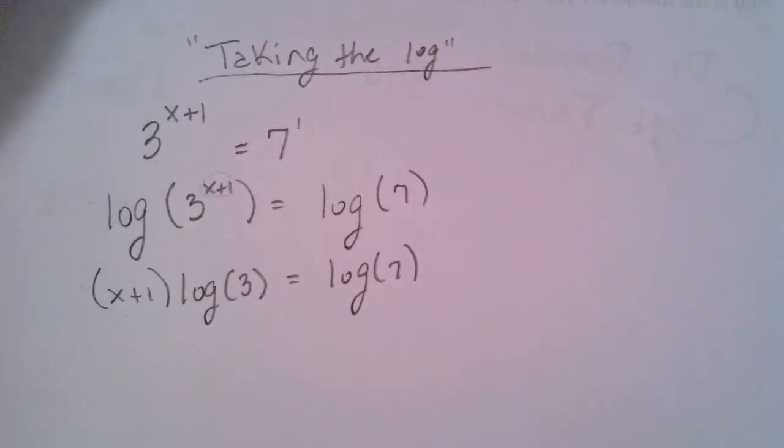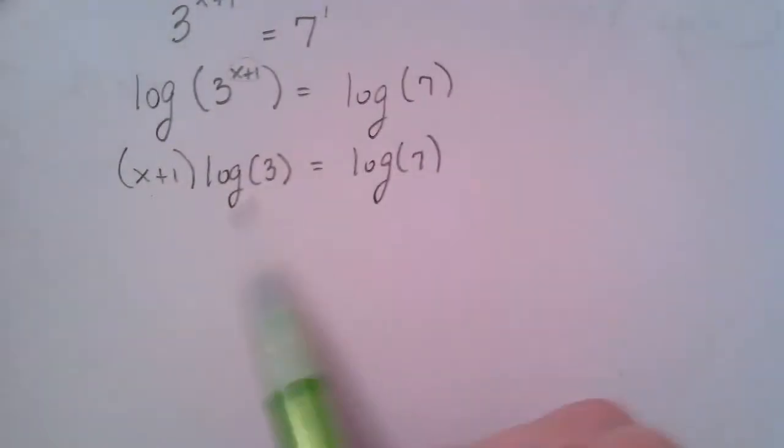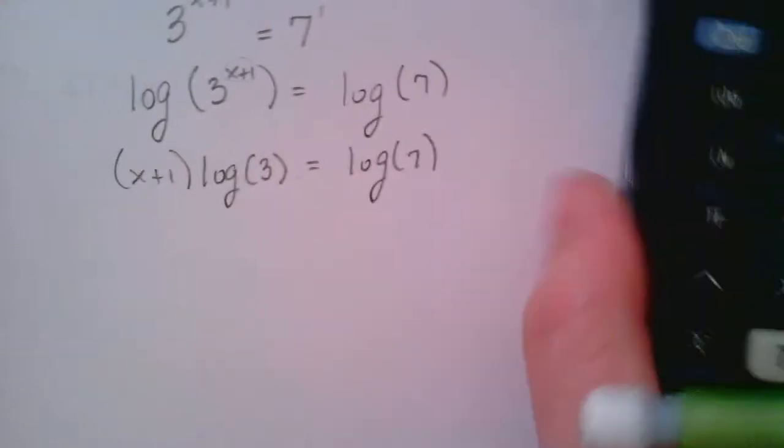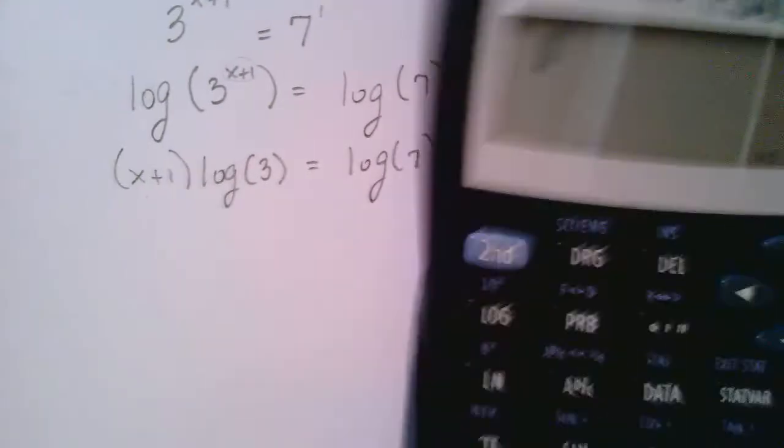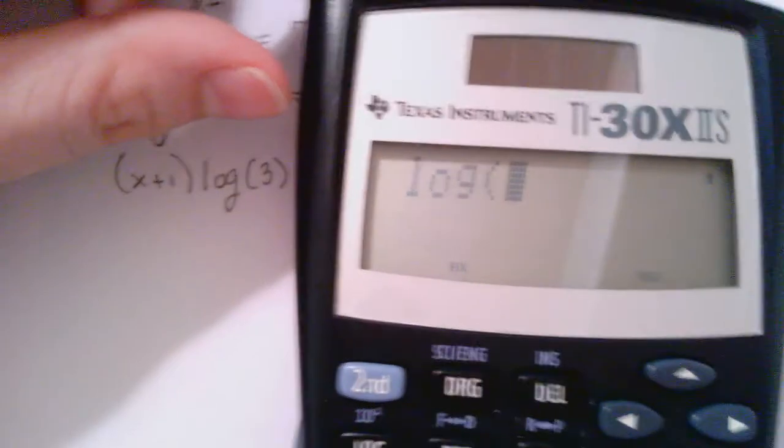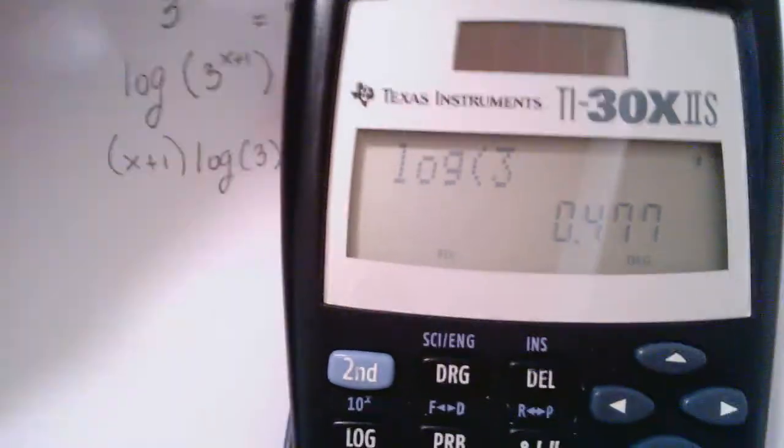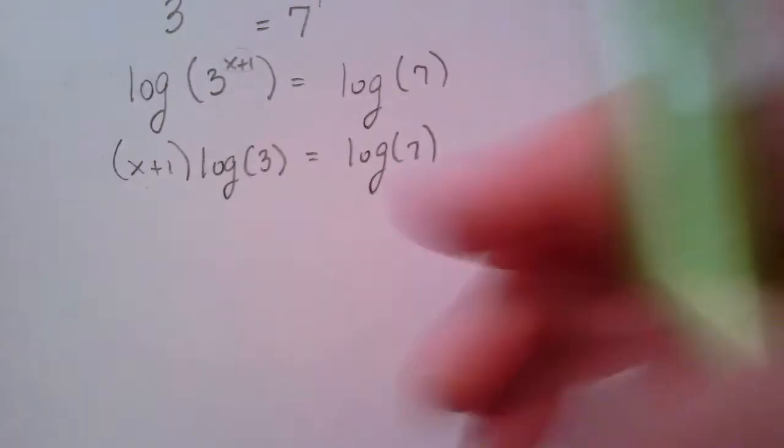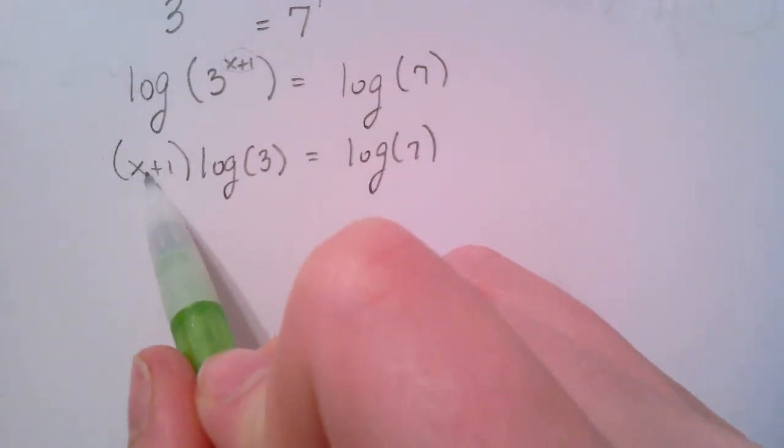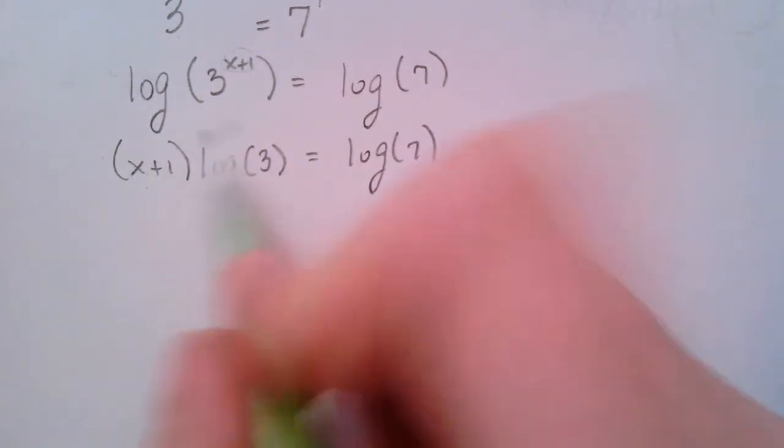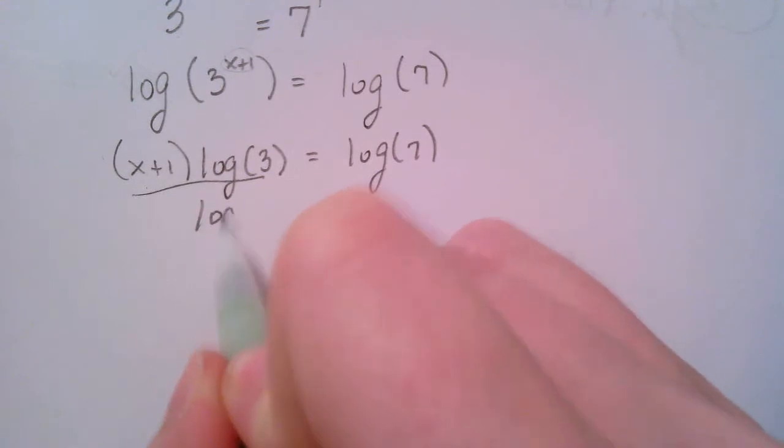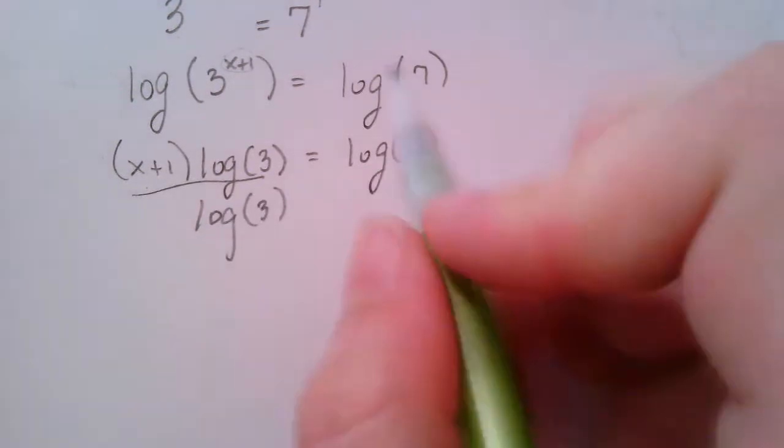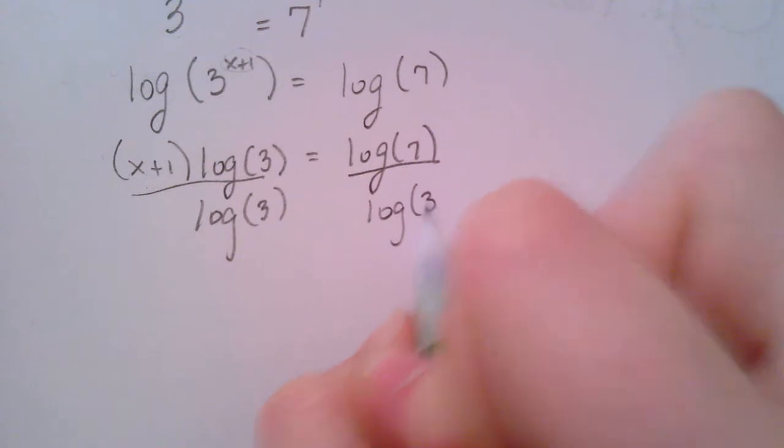OK, now if you're not convinced of this already, log of 3 is just a number. I'm going to plug it into my calculator and show you. So log of 3 is just the number 0.477. And I'm saying that because if I take an x+1 and multiply by a number, I can just get rid of that number through division. So I'm going to divide both sides by log of 3.